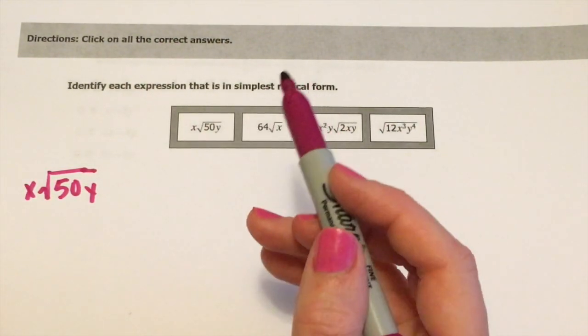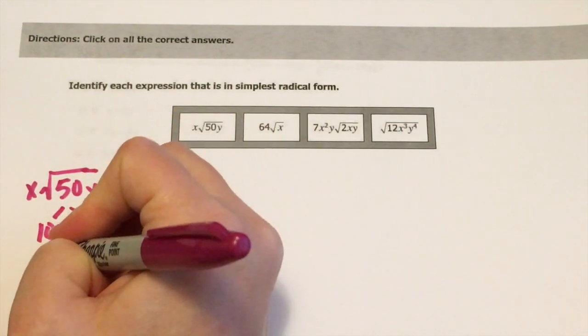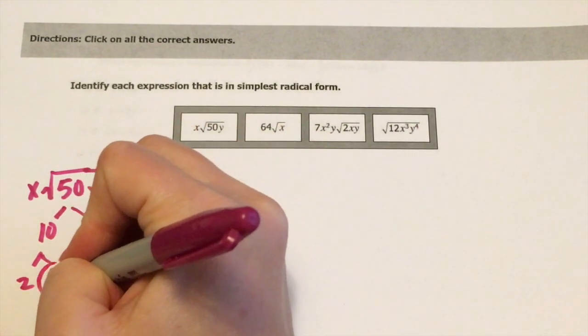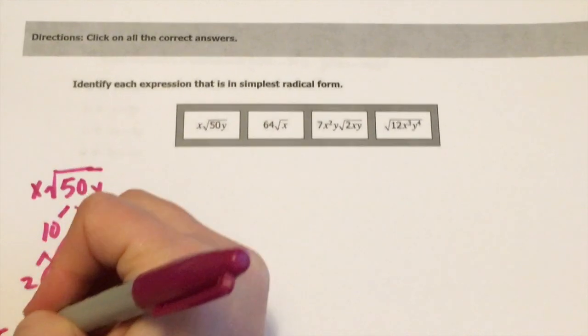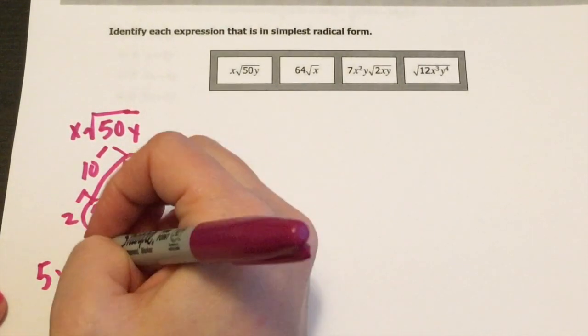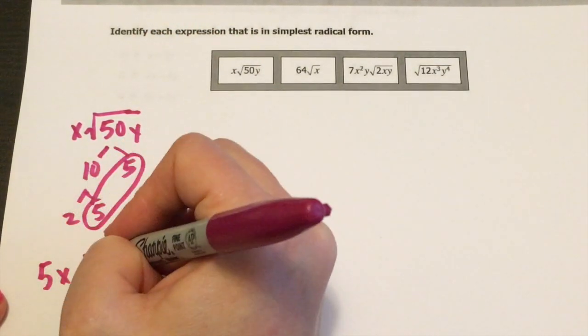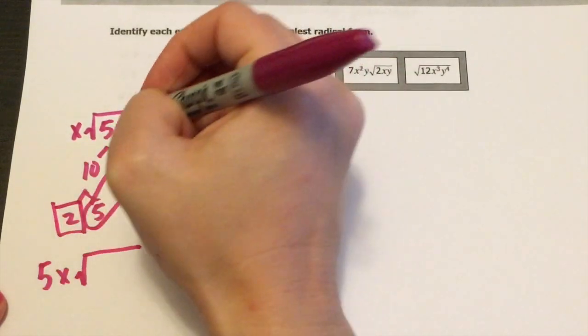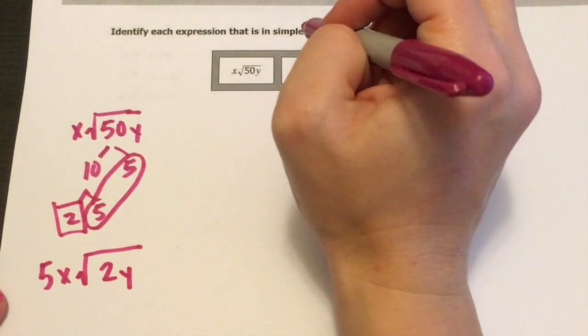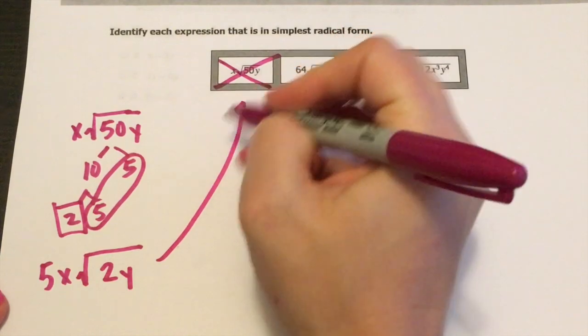Here, 50, we can probably break down more, right? Because I can say 10 and five, and then two and five. The five would come out. So five x, and then there's already five x, and then two is left inside, y is still inside, so two y. So identify each expression that's in its simplest radical form. That is not in its simplest form because that is the answer for that one, right?